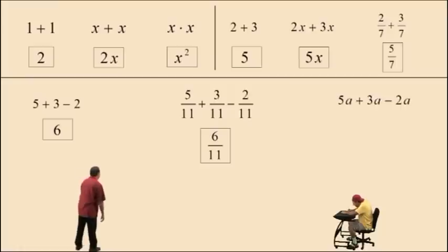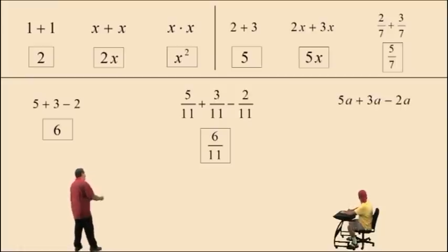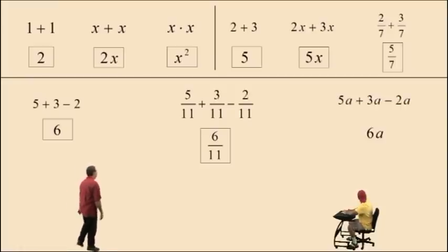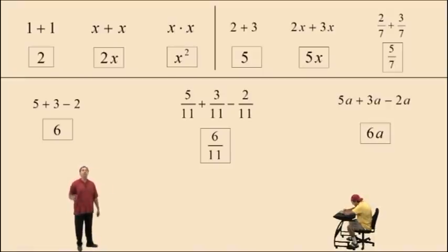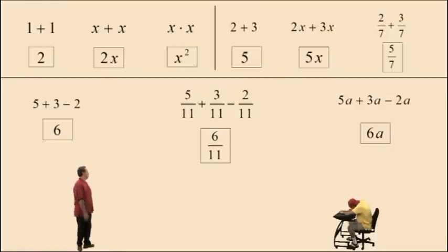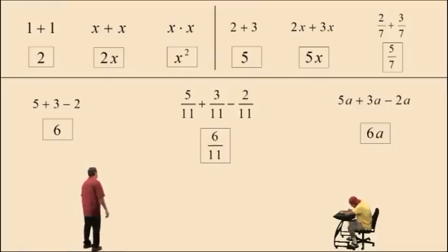Now bring us home, Charlie. What's 5a plus 3a take away 2a? 6a. Very nice there, Charlie. That's it. It just requires that you have the ability to do 5 plus 3, which is 8, subtract 2, which is 6. They're all like terms here.